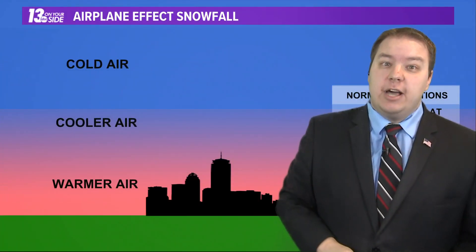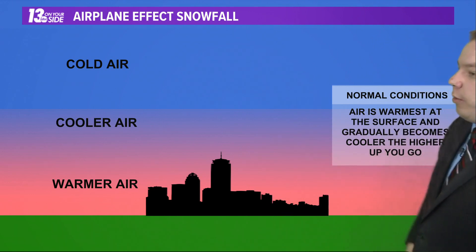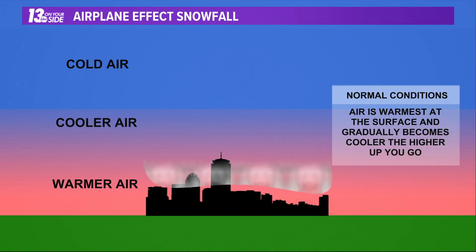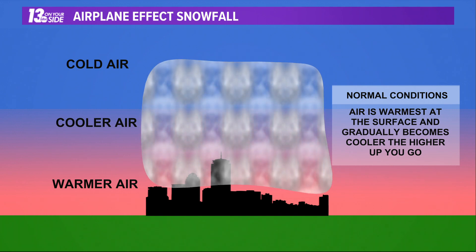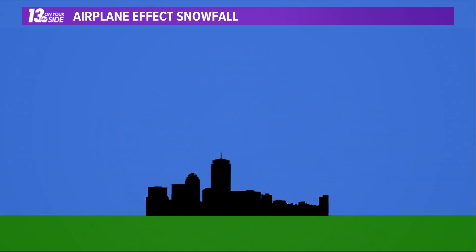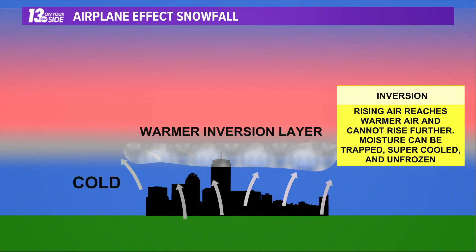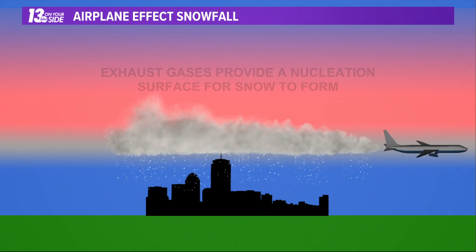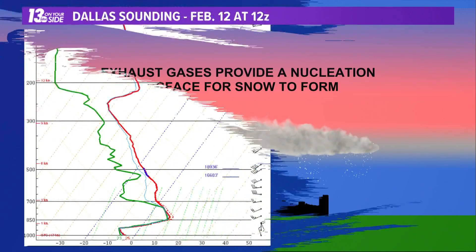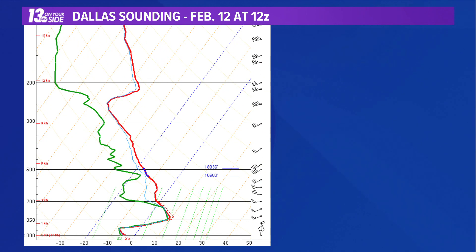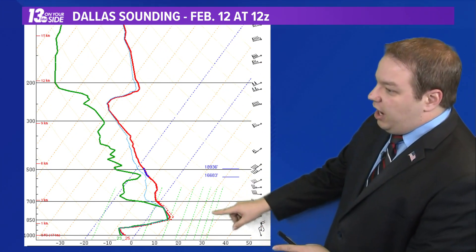So here's how that actually comes to be. Here's a picture of the atmosphere. Normally warmer air near the surface, colder air up in the atmosphere — that allows air to rise, condense into clouds, form raindrops, snowflakes, the usual. What happened on February 12th is we had something called an inversion, where warmer air is above the surface. The cold air can only make it so far before it gets trapped. You can have super-cooled water droplets in that air — droplets that did not form into snow crystals. And then the exhaust gases of a plane actually provide enough surface for those little snow crystals to form on.